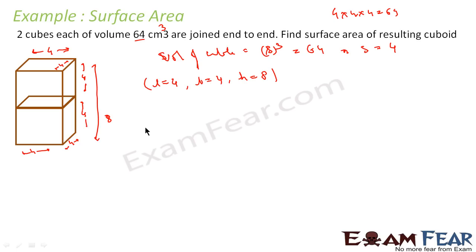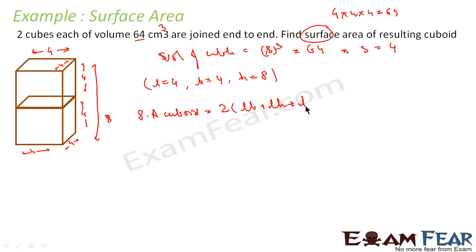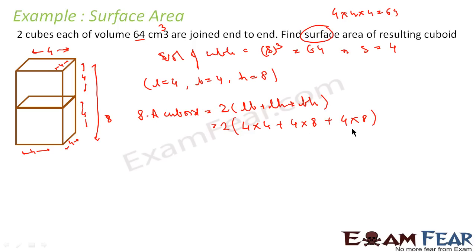We need to find the surface area of the new cuboid. The formula is: surface area of cuboid = 2 × (length × breadth + length × height + breadth × height). Substituting: 2 × (4 × 4 + 4 × 8 + 4 × 8) = 2 × (16 + 32 + 32) = 2 × 80 = 160 cm².